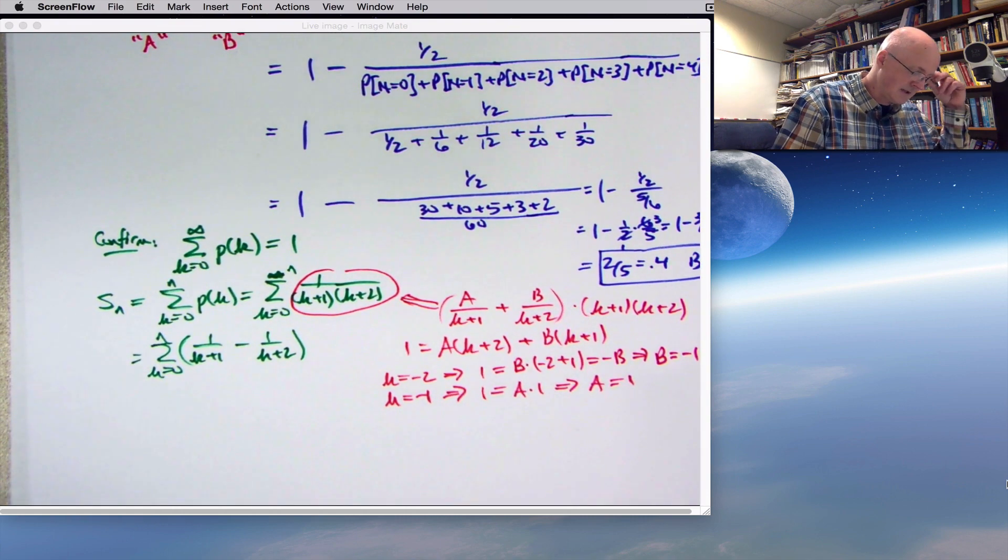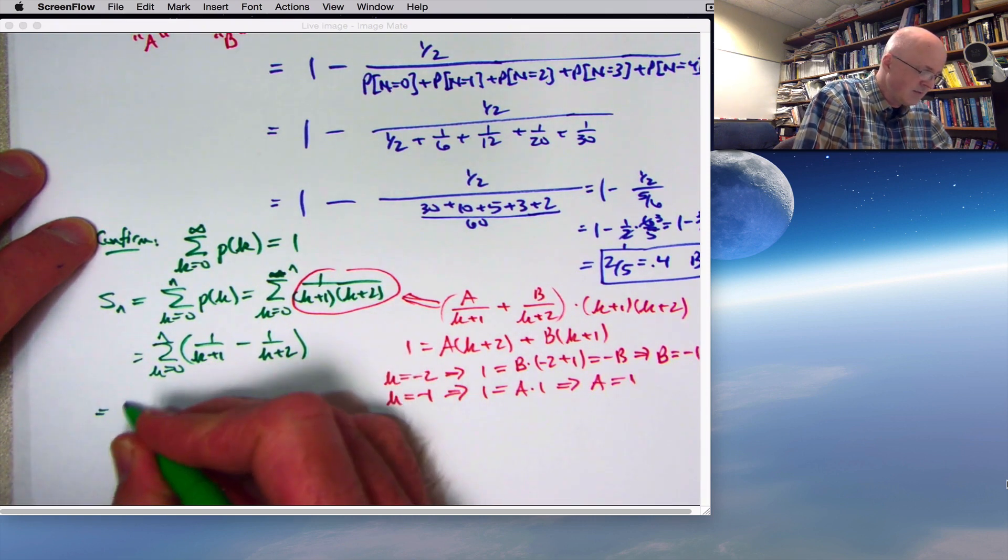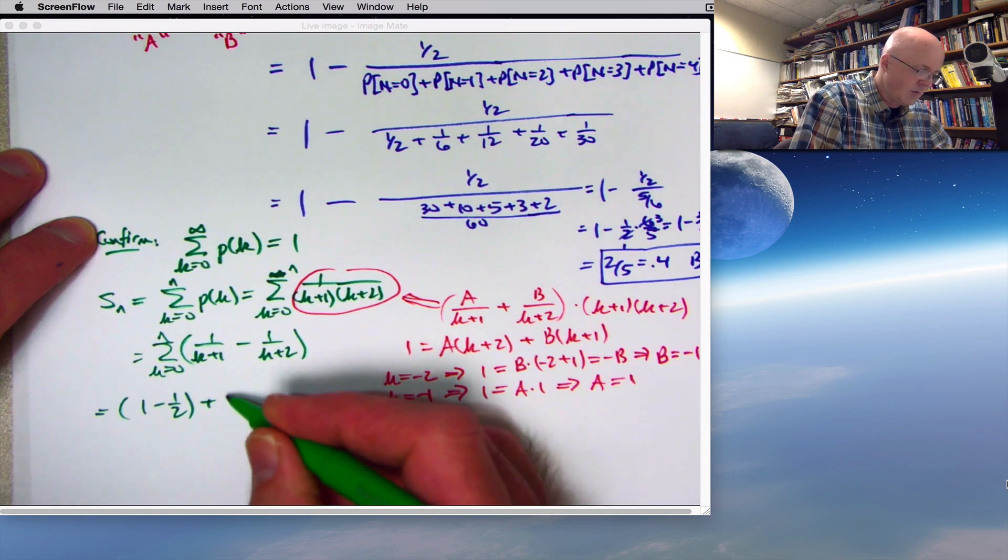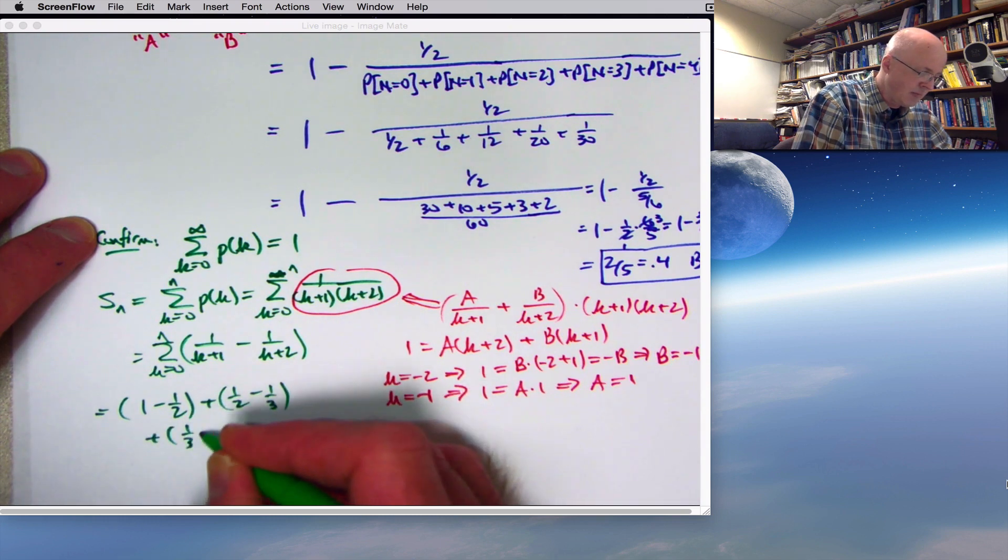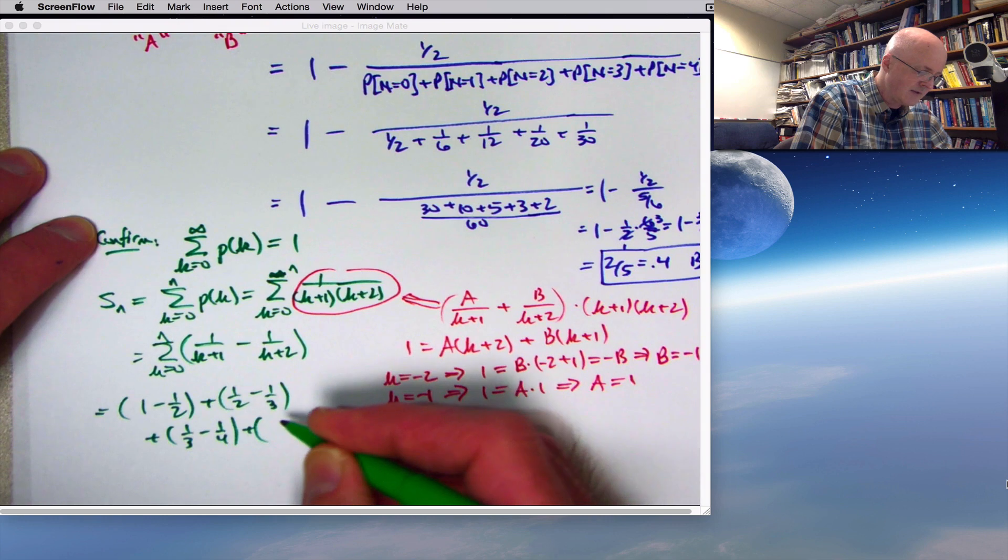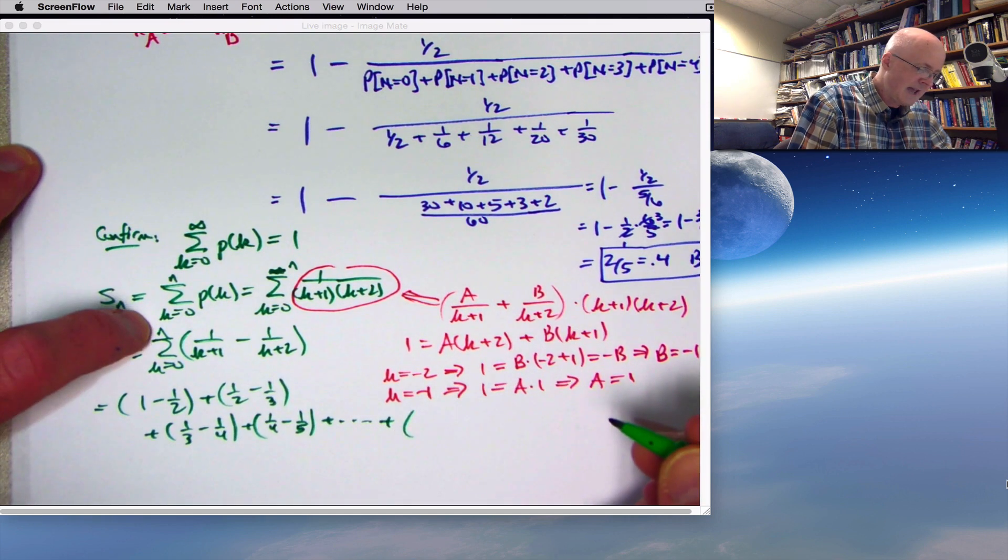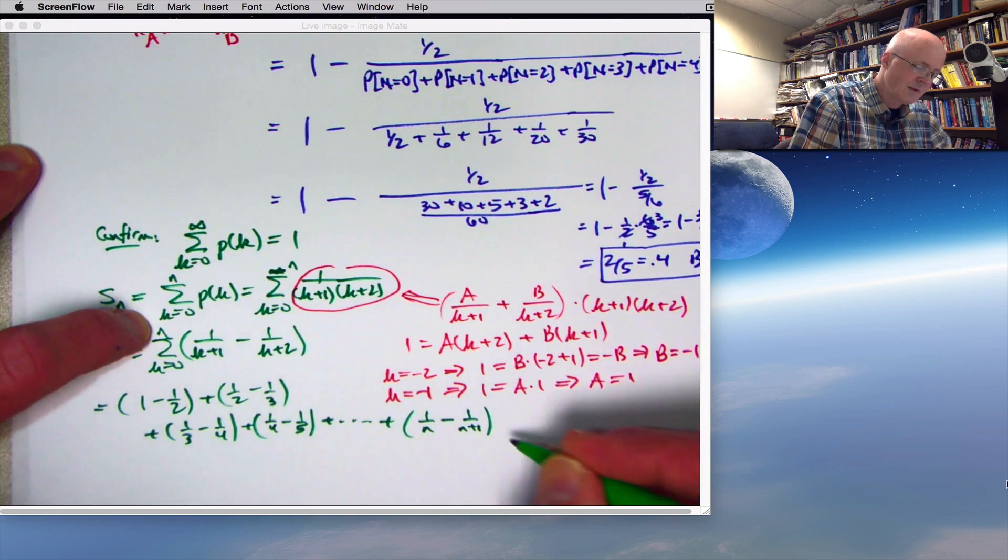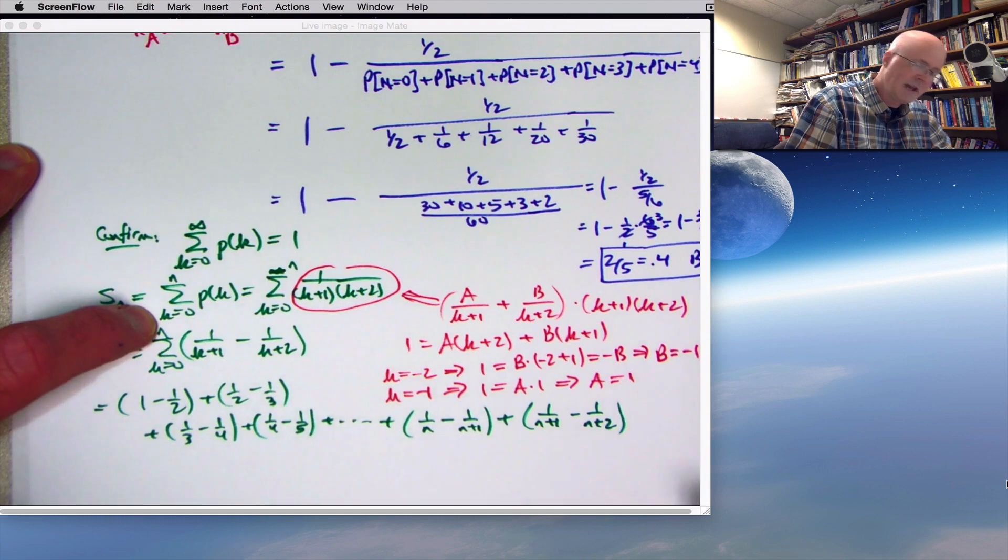If I write this out, pretending n is fairly large, a bunch of stuff cancels. When k is 0, I get 1 minus 1 half. Check that when you plug in k equals 0. You get a 1 and 1 half there. When k is 1, I get a 1 half minus 1 third. When k is 2, I get a 1 third minus 1 fourth. You see the pattern here? When k is 3, I get a 1 fourth minus 1 fifth, etc. When k is n minus 1, I get a 1 over n minus 1 over n plus 1. And finally, when k is n, I get a 1 over n plus 1 minus 1 over n plus 2. So again, a bunch of stuff cancels.